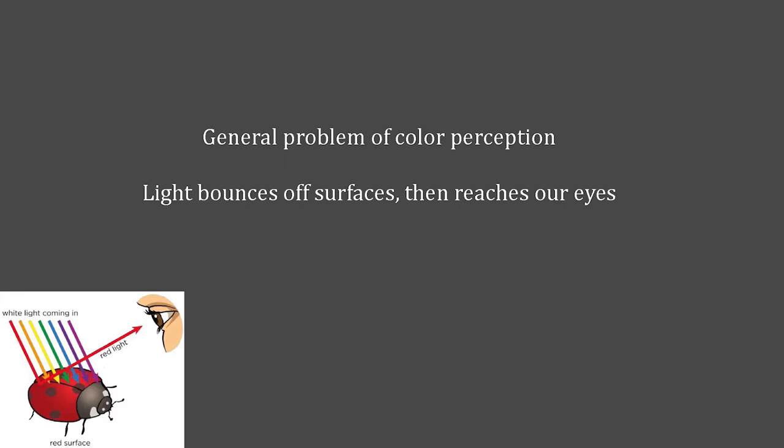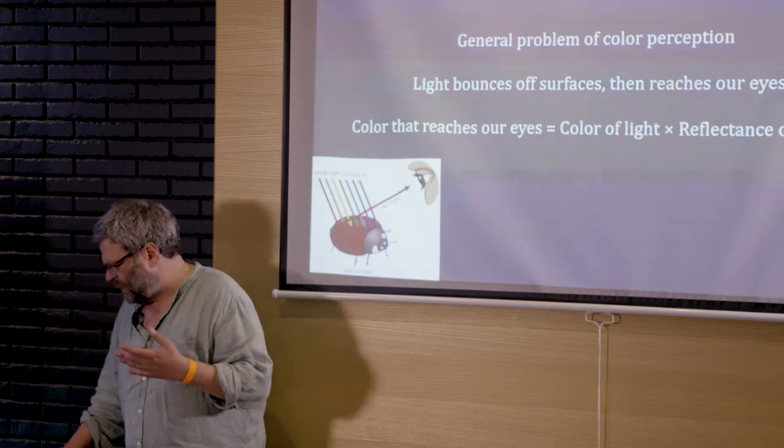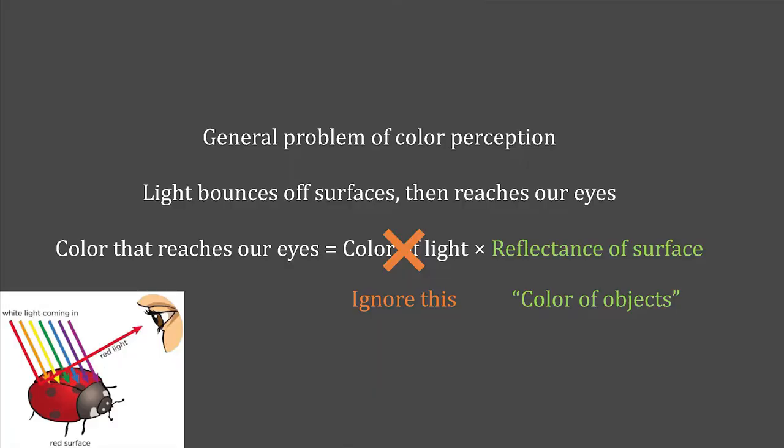Very schematically, there's light, it bounces off surfaces of objects and then it reaches our eyes. That's how we see things. Now the color that reaches our eyes is something like a product. It's not really a product, but we can think of it as a product of the color of the light and something called the reflectance of the surface that it bounced off of. Generally, you don't care about the color of the light, but the reflectance of a surface is actually what we call the color of an object.